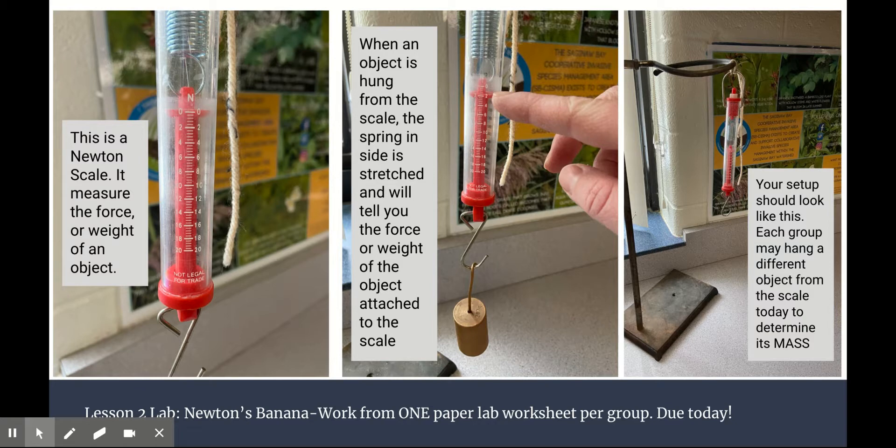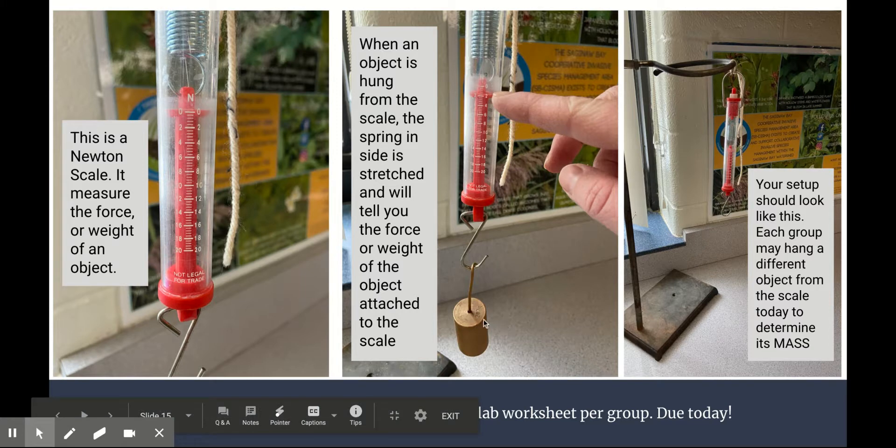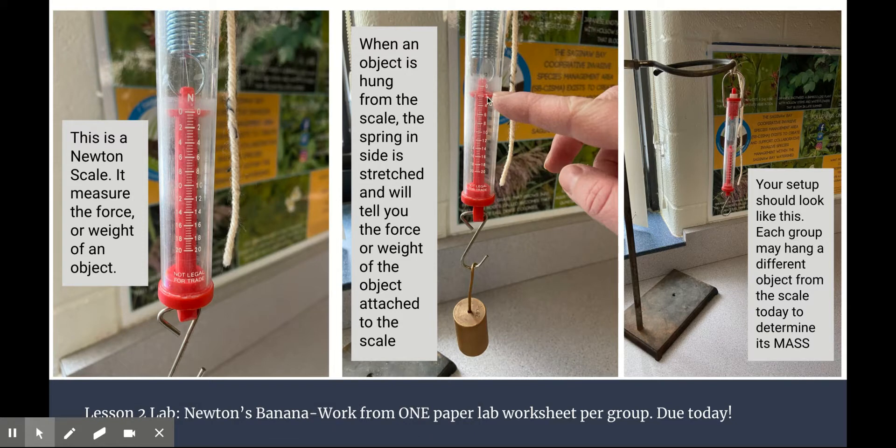When an object is hung from it, the spring will move and record the force or the weight of the object being pulled down by gravity. So you can see that for an example, I just hung one of these metal masses that I have from my supply room. And I hung it from the Newton scale and it says it has a weight of 2 newtons. Now be very careful. This is not measuring the mass. You're going to have to devise a way to figure out the mass of the object.